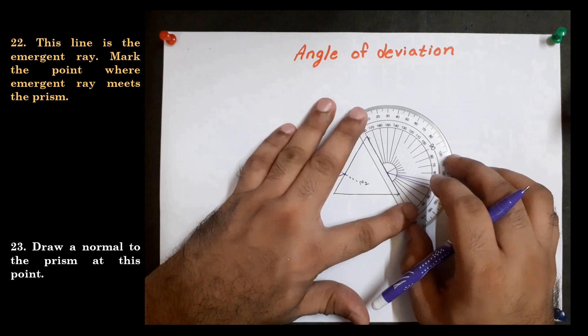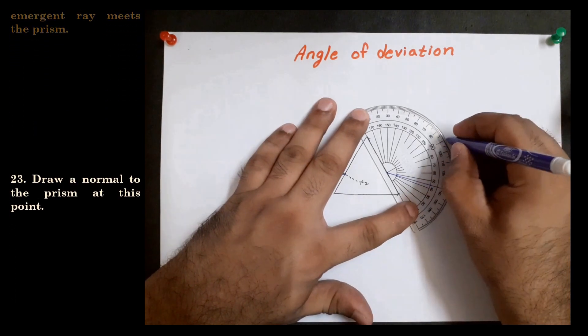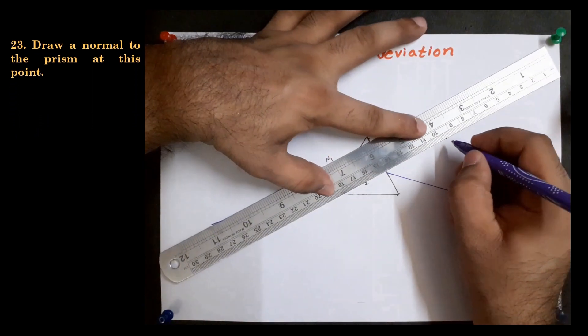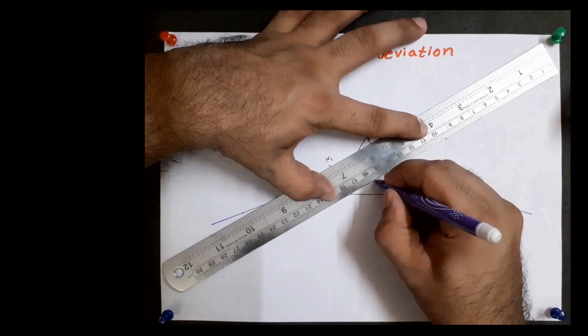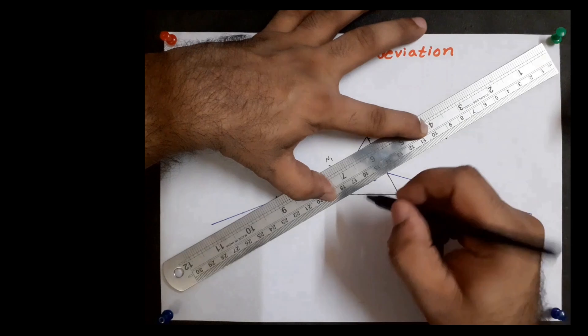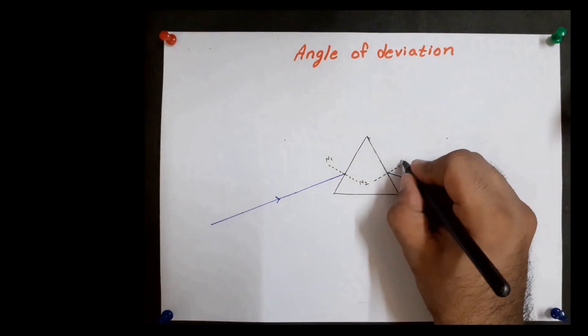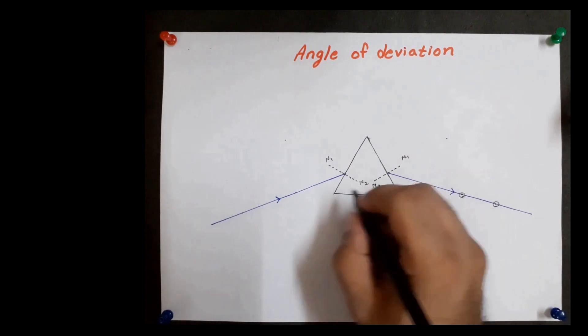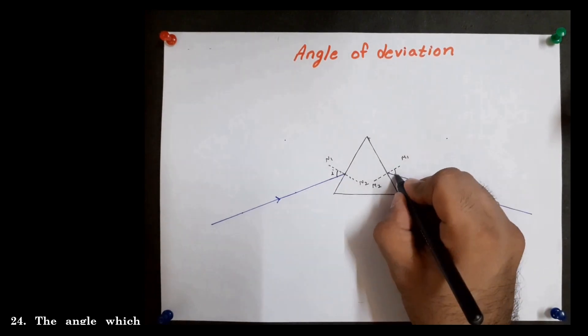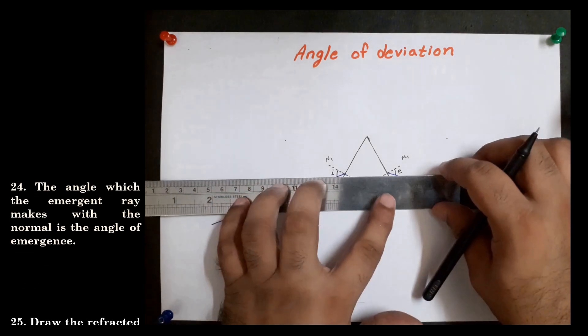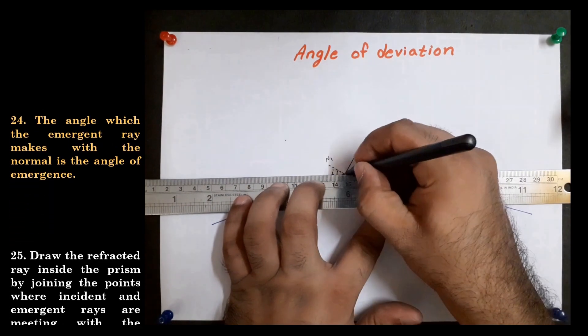Mark the point where the emergent ray meets the prism. Draw the normal to the prism at this point. The angle which the emergent ray makes with the normal is the angle of emergence.